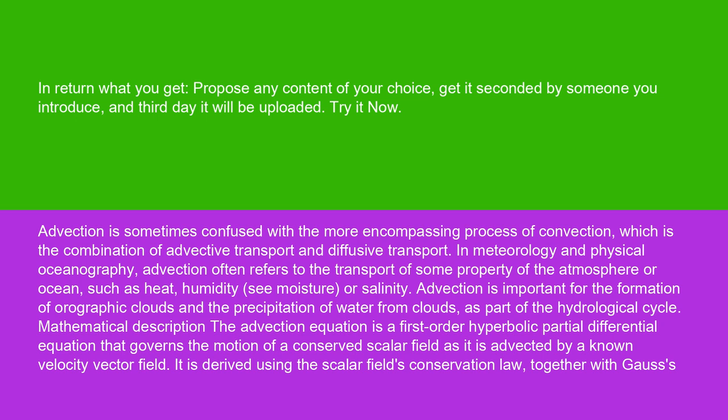In meteorology and physical oceanography, advection often refers to the transport of some property of the atmosphere or ocean, such as heat, humidity, sea moisture, or salinity. Advection is important for the formation of orographic clouds and the precipitation of water from clouds as part of the hydrological cycle.